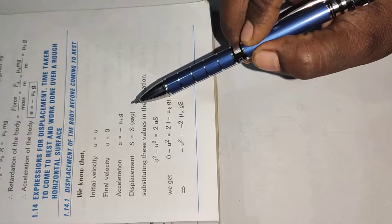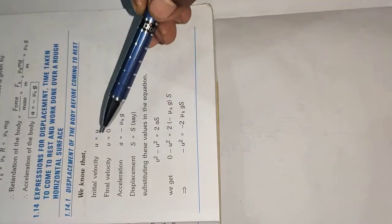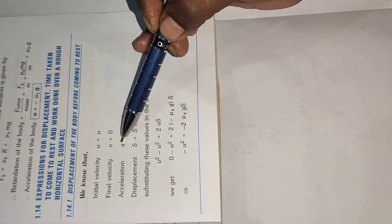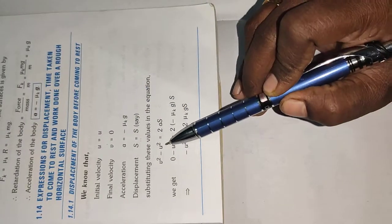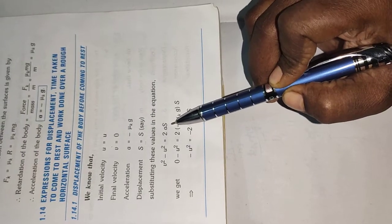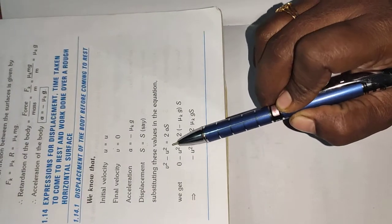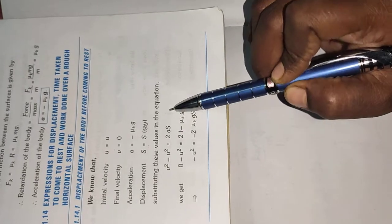S equal to U T plus half A T square. And then V U A S. Third formula what is it? V square minus U square equal to 2 A S. Okay. We are taking V square minus U square equal to 2 A S.